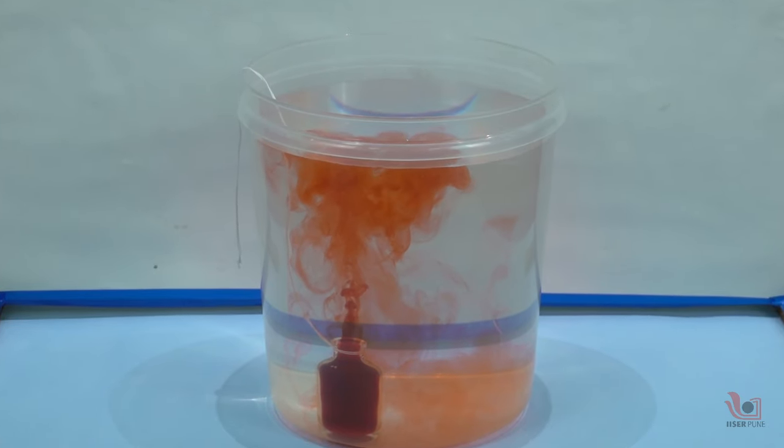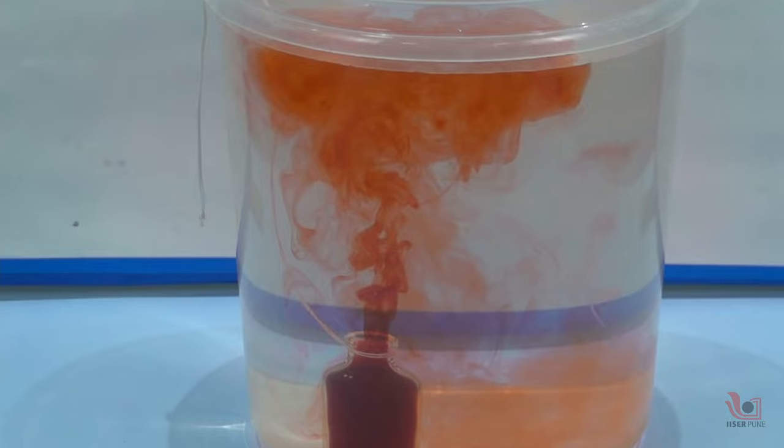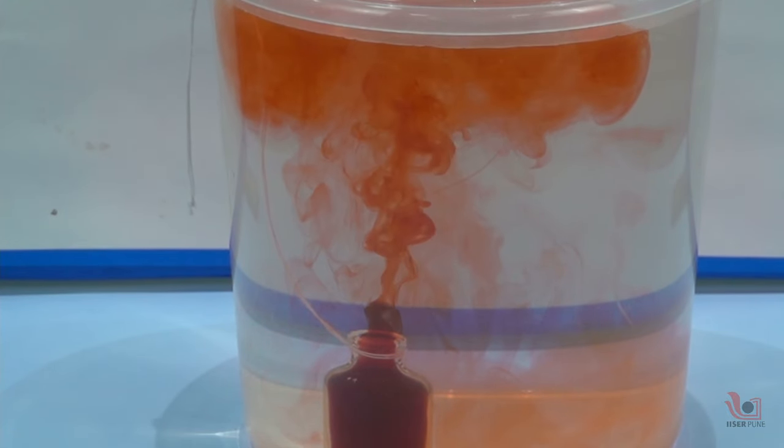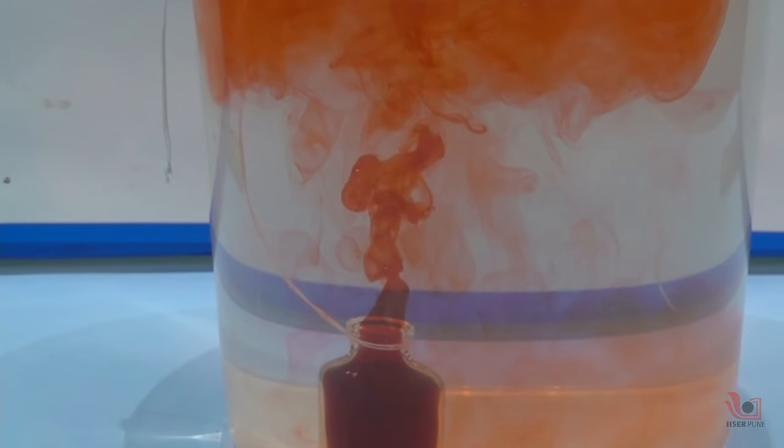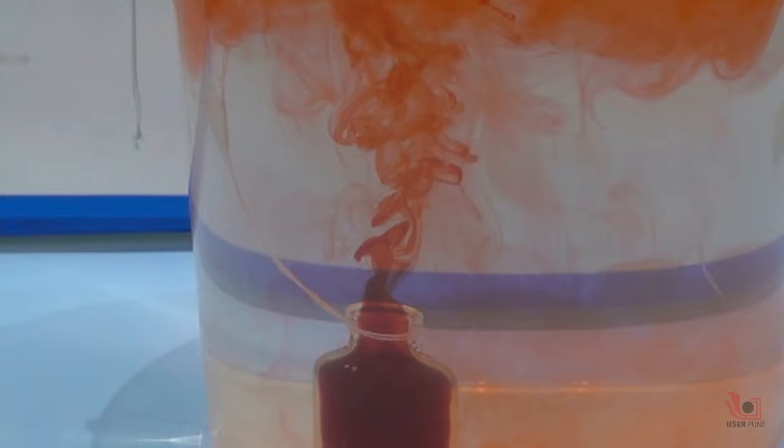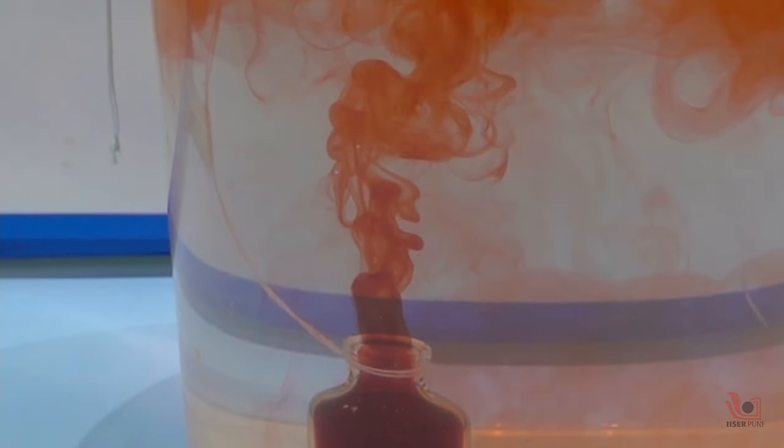The density of hot water is less than the density of cold water. When we submerge the hot water bottle in the cold water, due to the lower density of the hot water, it goes towards the upper side in the cold water container.